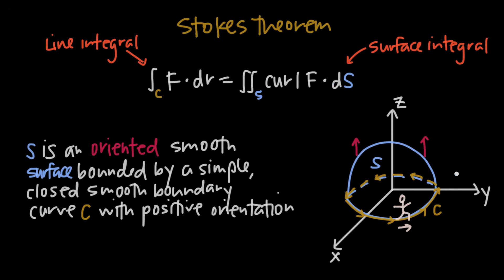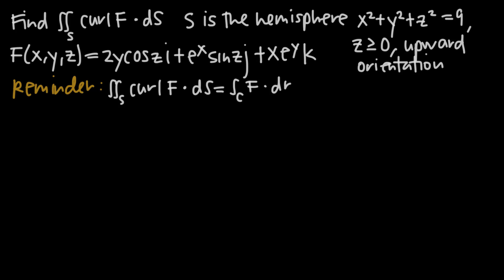Let's go ahead and do a couple of examples. The great thing about Stokes' Theorem is that because it relates the line integral over c to the surface integral, and these two things are equal, we can evaluate either way. When tackling Stokes' Theorem problems, you're either given the information on the left side and need to find the value on the right, or given the right side and need to find the left. Notice in this first problem we've been asked to find the value from the left-hand side.